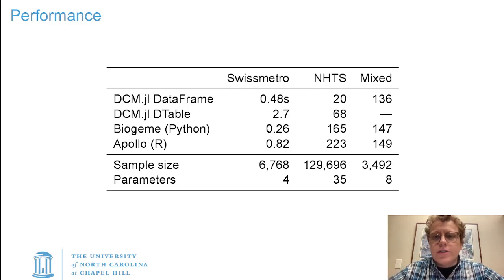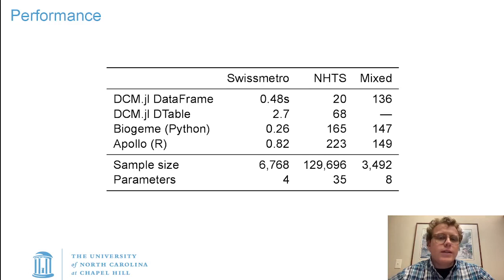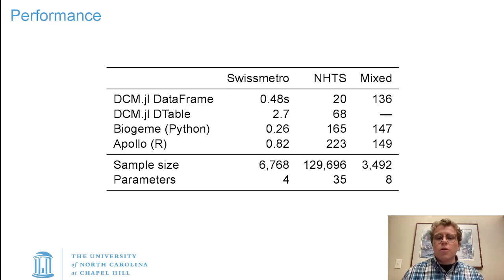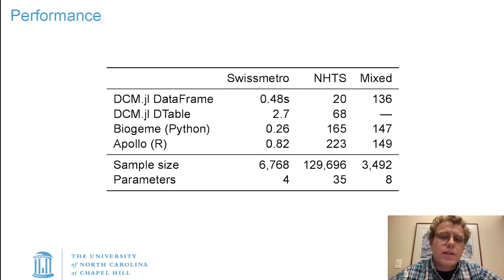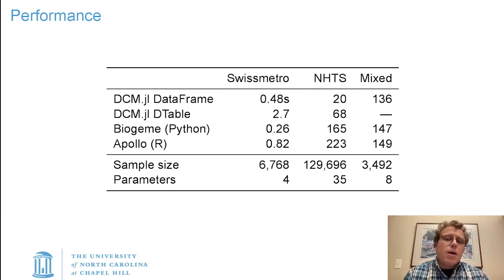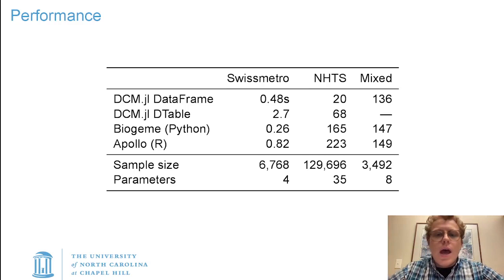Here's the classic slide in a Julia presentation: what does the performance look like? The top two rows are DiscreteChoiceModels.jl using a data frame and using a Dagger DTable. We'd expect the DTable to be slower because of more overhead in interprocess communication. These were all estimated on a single machine. I've also estimated the same models in Biogeme, which is a Python package, and Apollo, which is an R package that are both commonly used. I've estimated three models: the Swiss Metro example from Biogeme, which is a simple multinomial logit with just under 7,000 observations and four parameters; a model based on the National Household Travel Survey in the US with 130,000 observations and 35 parameters; and a mixed logit from the Apollo examples.